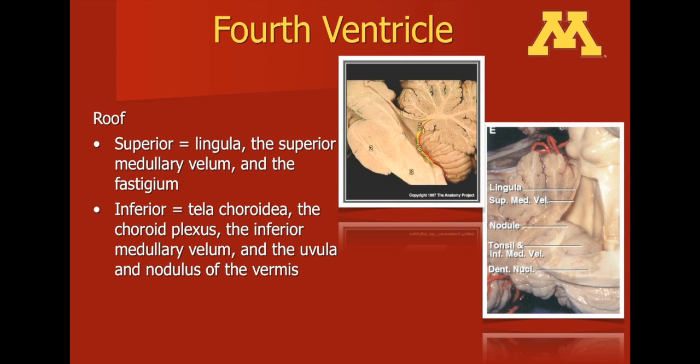Here are additional pictures of the fourth ventricle. The choroid plexus of the fourth ventricle lies along the inferior medullary valum, which can be depicted by numbers five, four, and six.